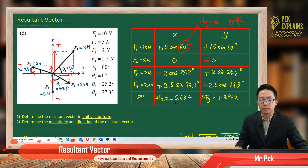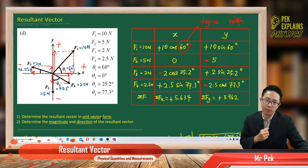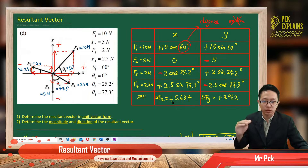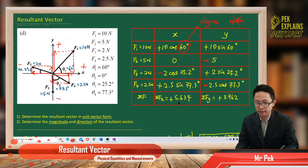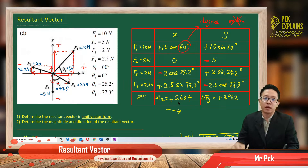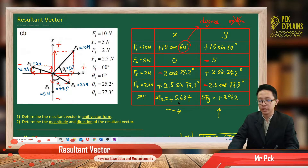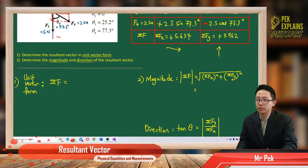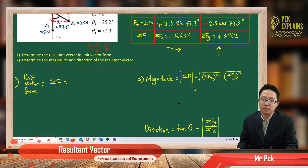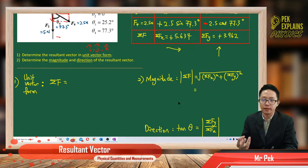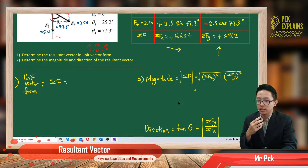We already have the total X and total Y. The positive total X means it is going to the right, and the positive total Y means it is going up. Now we write the resultant vector in unit vector form. Unit vector form uses I, J, or K notation — I means the X component, J means the Y component, and K means the Z component. In our syllabus, we only learn two dimensions, so we use I and J only.